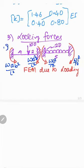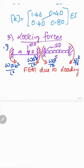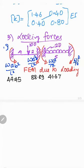Substituting the values: the fixed end moments due to loading are — M_AB = 44.45 kNm, M_BA = 88.89 kNm (using Wab²/L² and Wa²b/L²), and for the UDL span, M_BC = 41.67 kNm and M_CB = 41.67 kNm (using WL²/12). These are the fixed end moments due to loading.